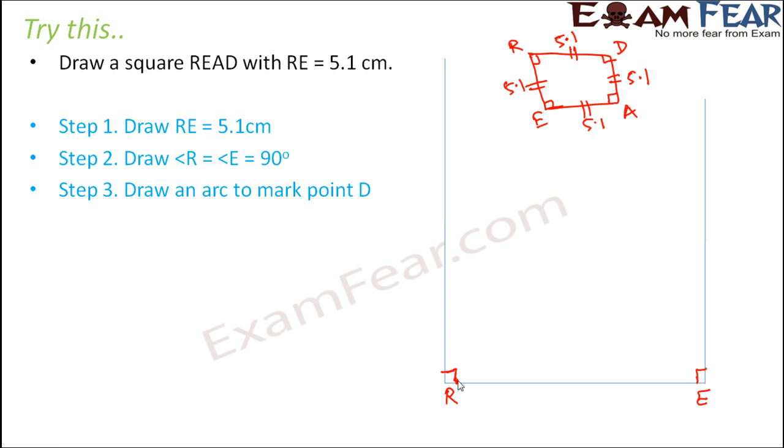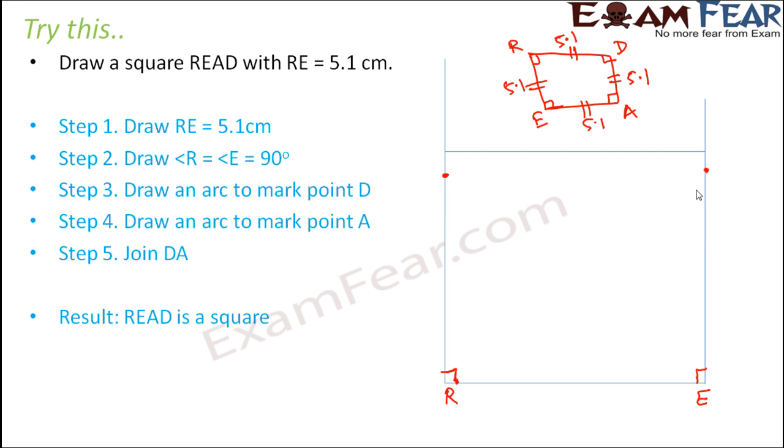Now you draw an arc to mark point D because the distance of D from point R would also be 5.1 cm. So somewhere here, let us say somewhere here would be point D, similarly somewhere here would be point A.